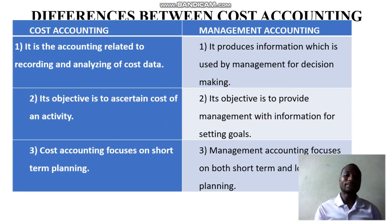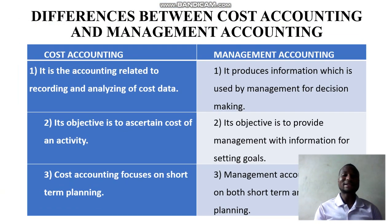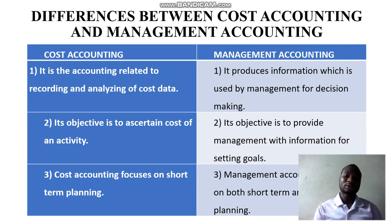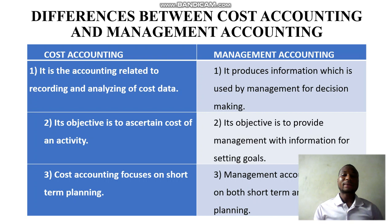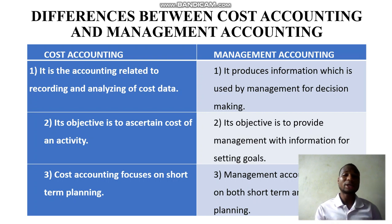Let's take a look at the specific differences. Under cost accounting, it is related to recording and analyzing cost data — you get the cost data and you analyze it. Management accounting, on the other hand, provides information that will be used by management for decision making. The information produced from management accounting is based on cost accounting data.